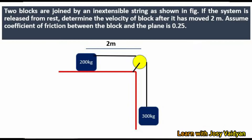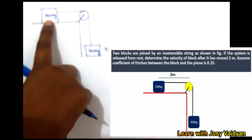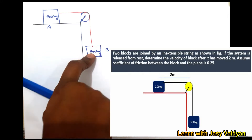Two blocks are joined by an inextensible string. If the system is released from rest, determine the velocity of the block after it has moved 2 meters. Assume the coefficient of friction between the block and the plane is 0.25. The pulley is weightless and frictionless. The two block weights are 200 kg and 300 kg.